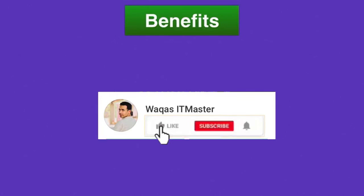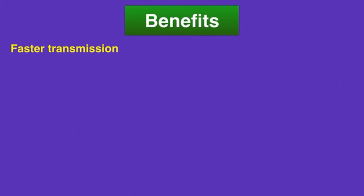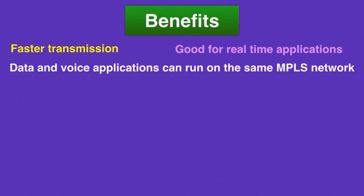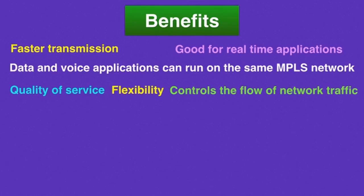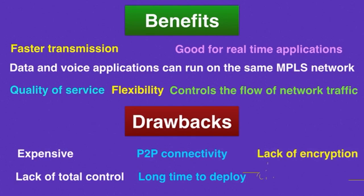Benefits of MPLS: it provides faster transmission so users don't experience downtime; it's good for real-time applications that cannot tolerate latency, such as video and voice; and data and voice applications can run on the same MPLS network. It also provides quality of service, flexibility, and controls the flow of network traffic. Drawbacks include being expensive, lack of total control, point-to-point connectivity only, long deployment time, lack of encryption, and cloud challenges. MPLS can work with IP, Ethernet, Frame Relay, and Asynchronous Transfer Mode.